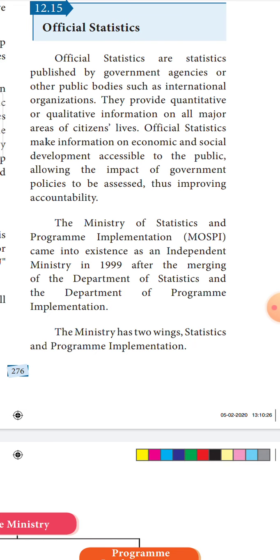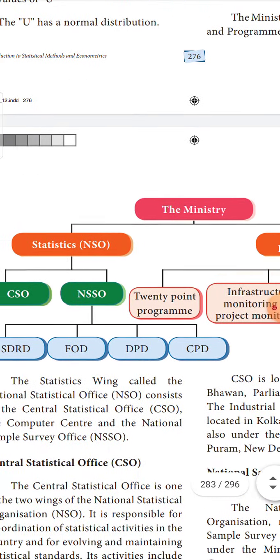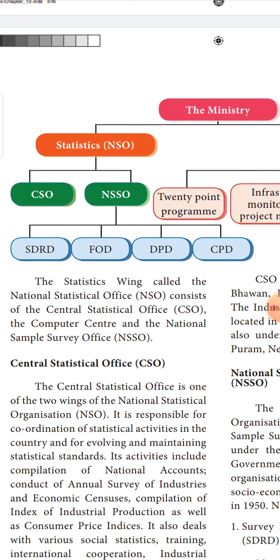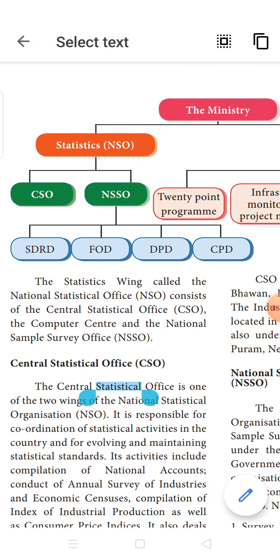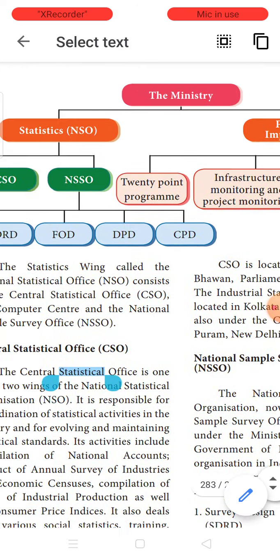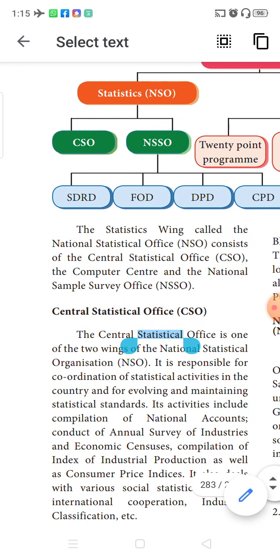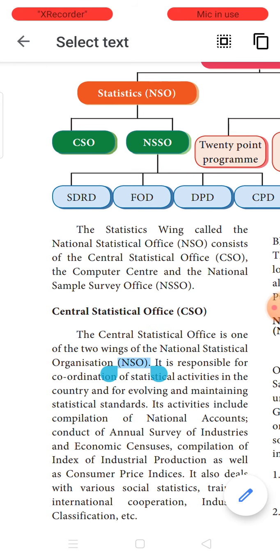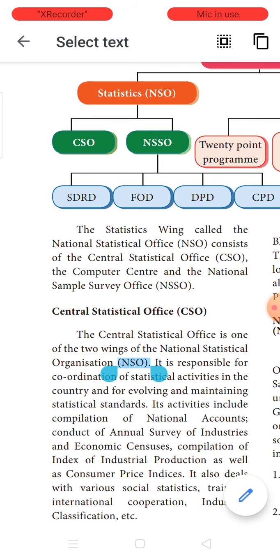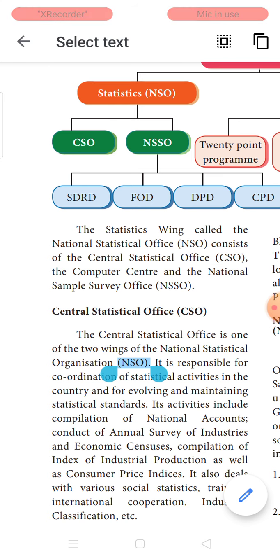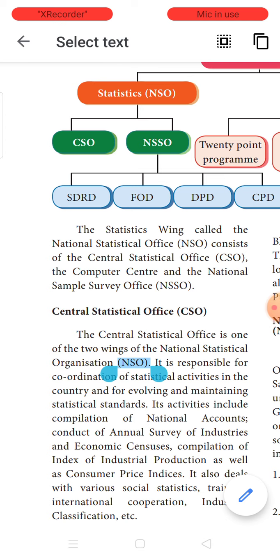This ministry has got two wings. One is the Statistics wing and the other is the Programme Implementation wing. Under the Statistical wing, there are two organizations: the Central Statistical Organization (CSO) and the National Sample Survey Organization (NSSO). Together these form the National Statistical Office (NSO).